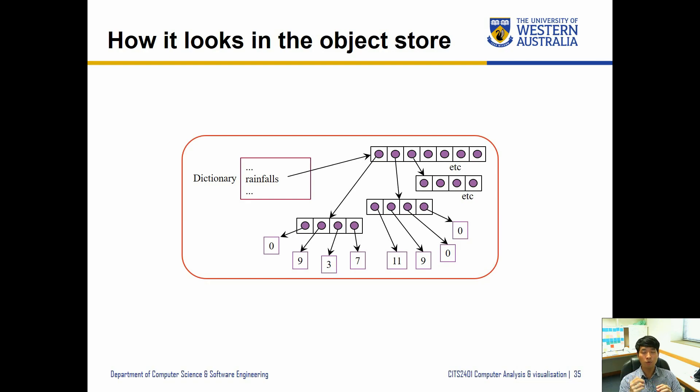instead of pointing to the value, it's going to point to another list. So basically it's a container containing another container. This container, the first item, is looking at this new container, and inside here is referring to each value itself. So hopefully this makes much better sense now that we understand how singular lists work.